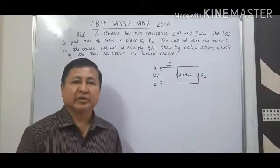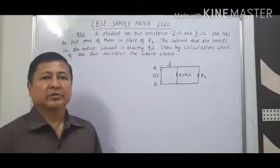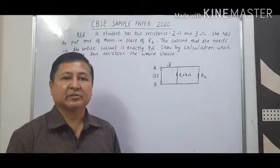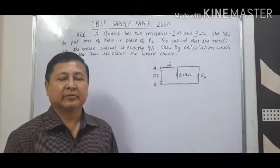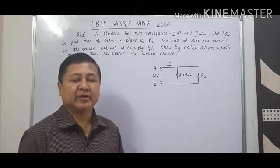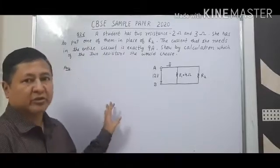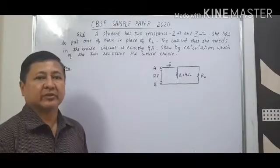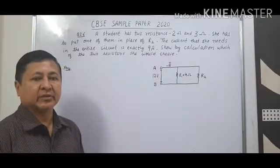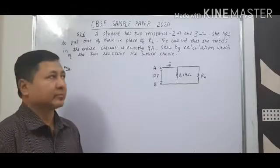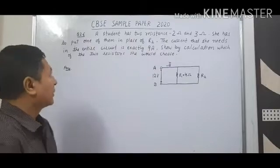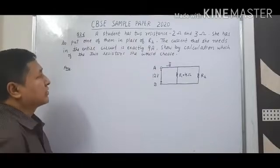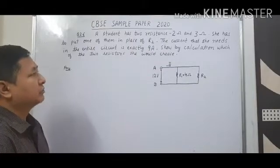Morning students. Yesterday CVAC released the sample paper, and today we are going to discuss the questions in the CVAC sample paper 2020. The first question is: a student has two resistances, 2 ohm and 3 ohm.